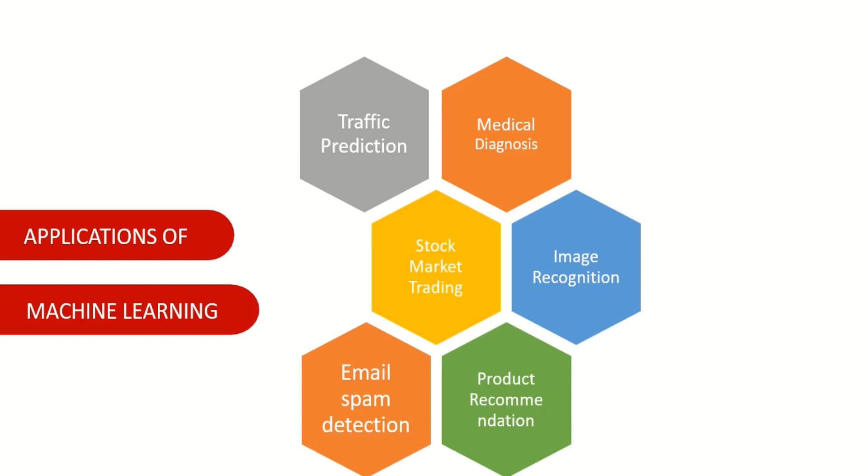And also image recognition. So we can also recognize images and predict some useful information. Moreover, the famous example under machine learning is real-time example is email spam detection where automatically we can detect email is spam or not. Moreover, and also product recommendation based on the past previous purchases of the customer.